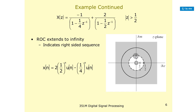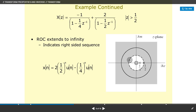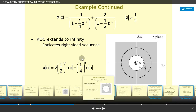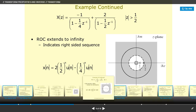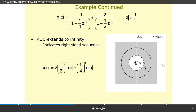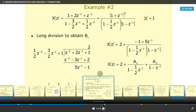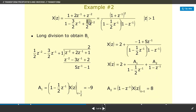The region of convergence goes from the pole locations to infinity. The final result is: x(n) = 2·(1/2)^n·u(n) − (1/4)^n·u(n). Example 2: X(z) = (1 + 2z^(−1) + z^(−2))/(1 − (3/2)z^(−1) + (1/2)z^(−2)), which can be rewritten as (1 + z^(−1))² / [(1 − (1/2)z^(−1))(1 − z^(−1))], with |z| > 1.